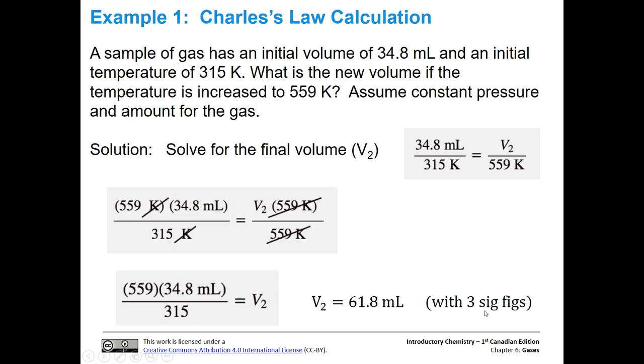Now we can go ahead and do the math, 559 times 34.8 divided by 315. And that's going to give us V2 as 61.8 milliliters. We're in volume units, this is good. Notice we also have three significant figures. Let's look at each of our given values. We can see that they all have three significant figures, very unambiguously. So our final answer needs to have three significant figures as well.